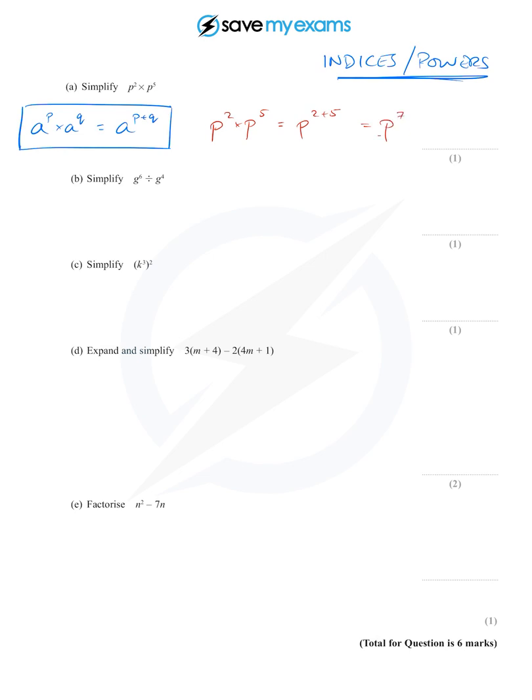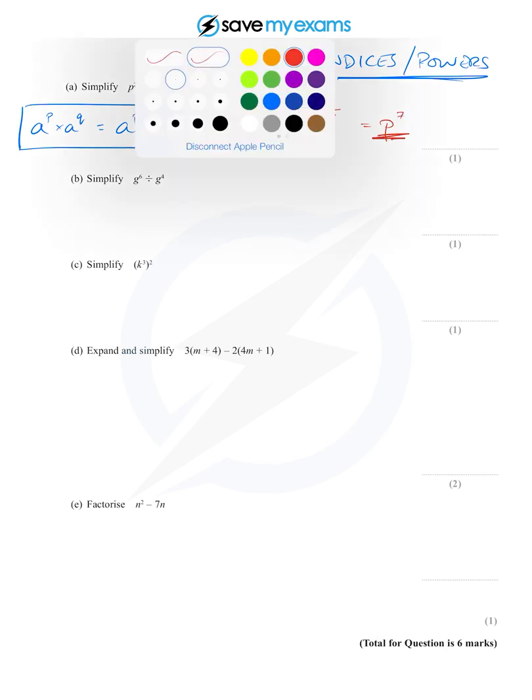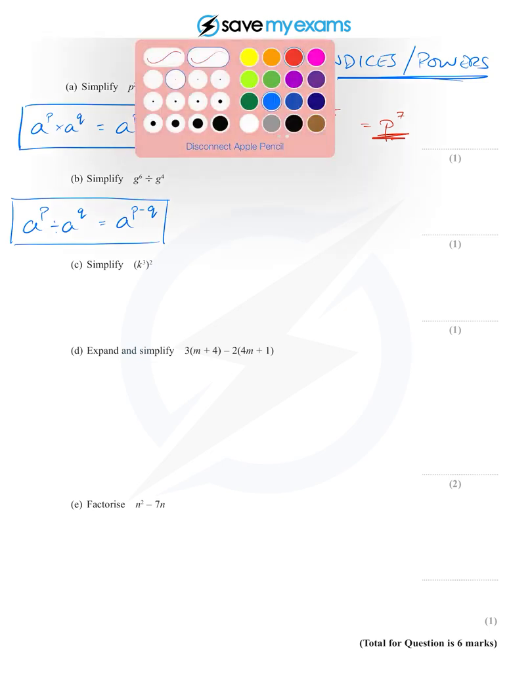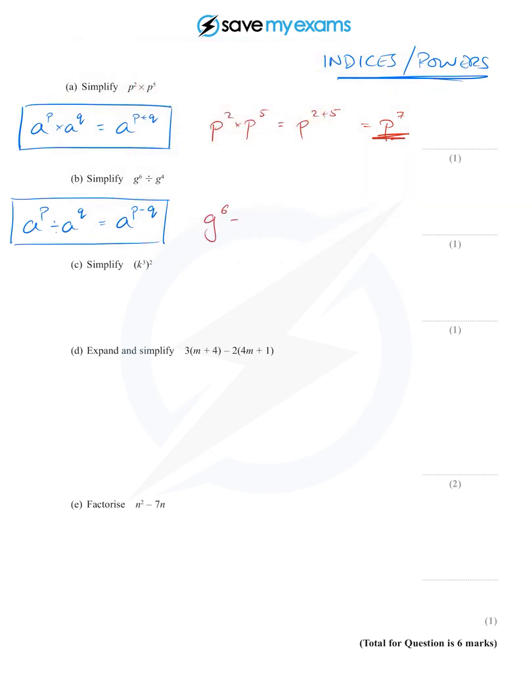The next one, we're actually dividing and there's a very similar rule. A to the p divided by a to the q is a to the p minus q. So multiplication essentially becomes addition in the powers and division becomes subtraction in the powers, quite easy to remember I hope. So this time we've got g to the 6 divided by g to the 4, and so we subtract the powers: g to the 6 minus 4, and 6 minus 4 is 2, so we've got g squared.